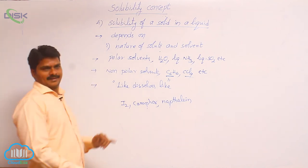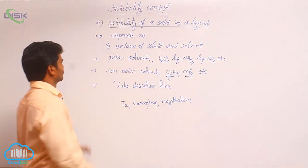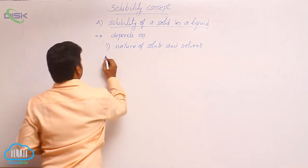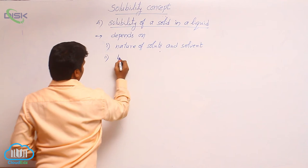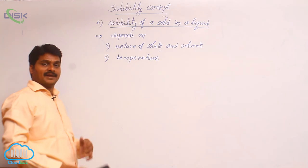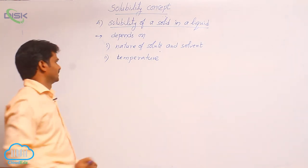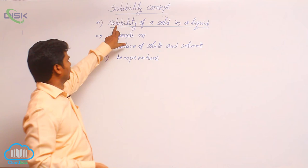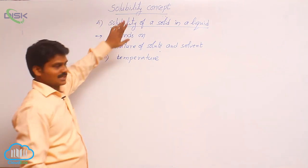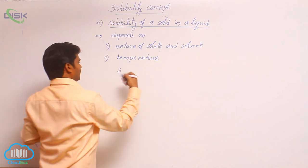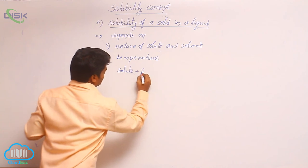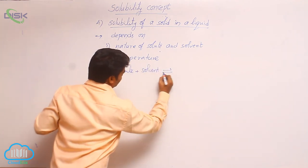This is the first factor: nature of solute and solvent. The second factor is the effect of temperature on the solubility of a solid in a liquid. Solubility is defined in a saturated solution. In a saturated solution, the equilibrium is: solute + solvent ⇌ solution.